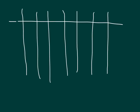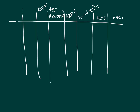Let's start by labeling a place value chart. The place furthest to the right is the ones place. Then we have the tens place, then the hundreds place. What comes next? The thousands place. After the thousands place, we have the ten-thousands place, then the hundred-thousands place, and then the millions place.